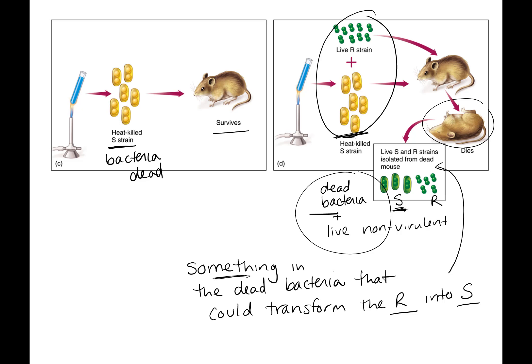The key finding was that there was something in the dead bacteria — Griffith didn't know it was DNA. He didn't have the tools of biochemistry at the time, but he knew genetic information could be transferred. When this genetic information was transferred, it changed the phenotype — the physical qualities of the R to the S strain.